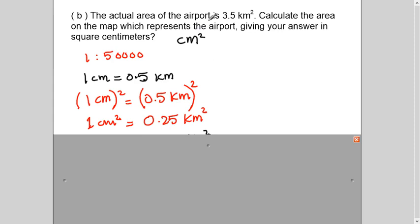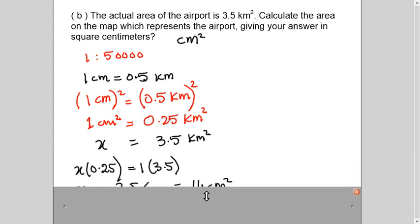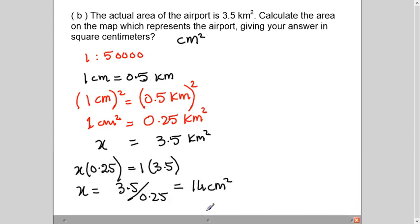And 3.5 square kilometers is my actual area of the airport, which I will write underneath here like this. And I will simply cross multiply. And it will give me area of the airport on the map in square centimeters. Simple cross multiplication. And I got 14 square centimeters.